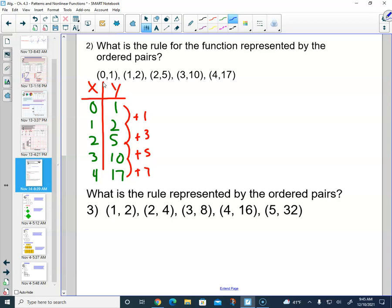So now we'll look to see if there's a common ratio. Well, if I multiply 1 times 2, I get 2. If I multiply 2 times 2, I get 4. I do not get 5. Therefore, there's no common ratio.